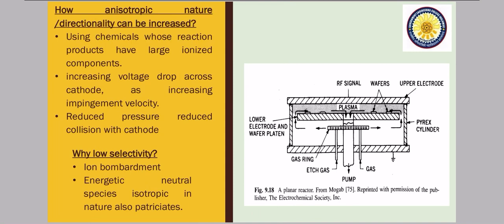How can very good directionality — or anisotropic nature — be achieved in this process? By using chemicals whose reaction products have large ionized components. If our ionized components are quite larger in size than the layer we want to remove, the impact will easily knock out and remove that layer.